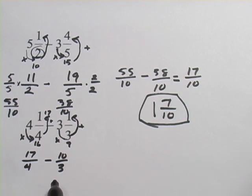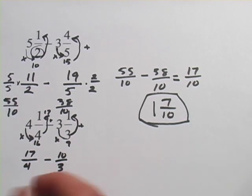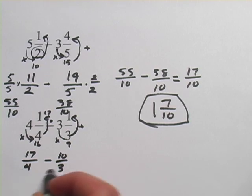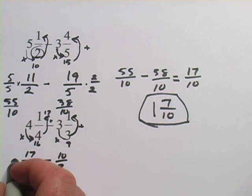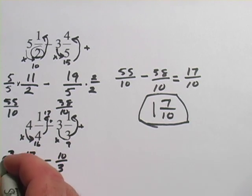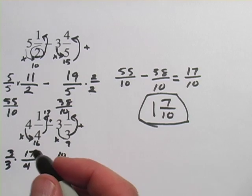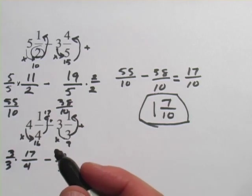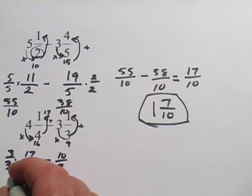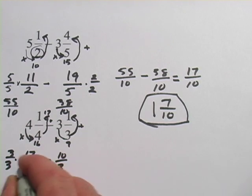So we have 17 fourths minus 10 thirds. Now I've got to figure out how to get the denominators the same. In this case, I think I could turn them both into 12s. I would multiply this one by 3. I would multiply this one by 4. So over here I have to multiply by 3 over 3. And 17 times 3 is 51. And 3 times 4 is 12.